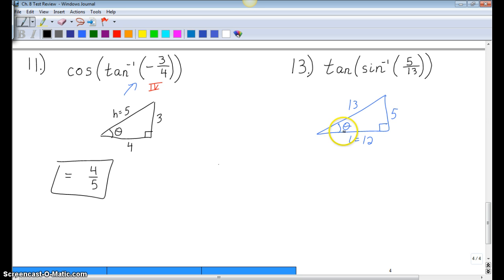Now that we have our triangle set up, we've filled all three sides in. We're just going to look at what ratio we need to find. So we're looking for the tangent ratio of theta. The ratio is opposite over adjacent. So our answer is 5 twelfths.